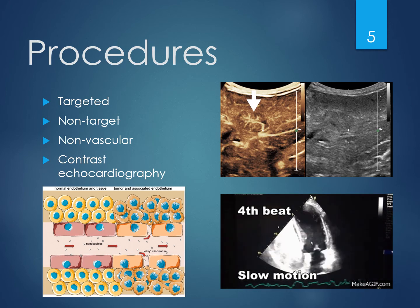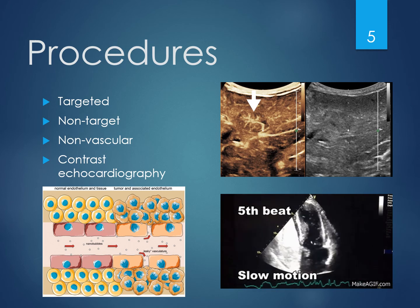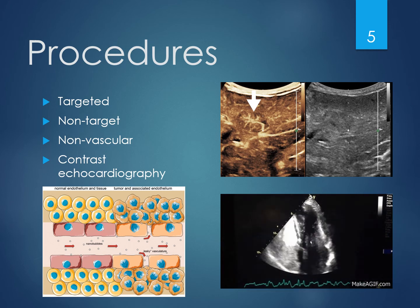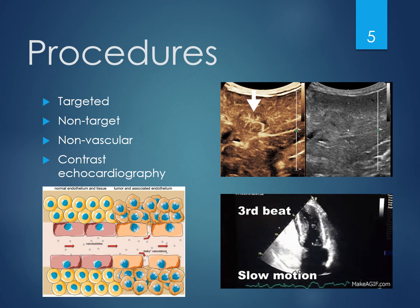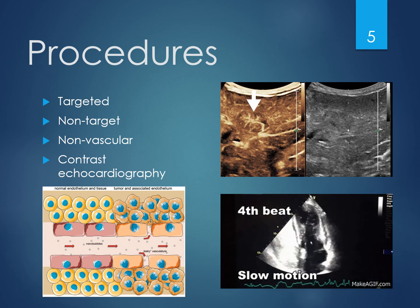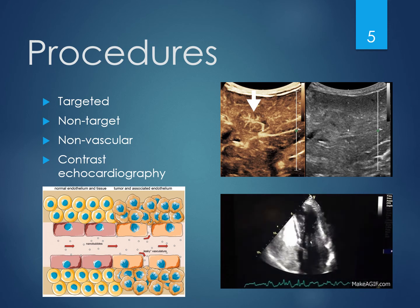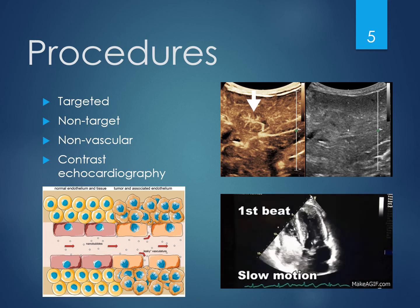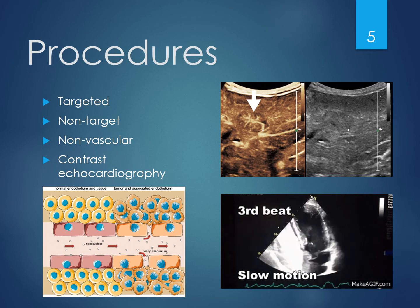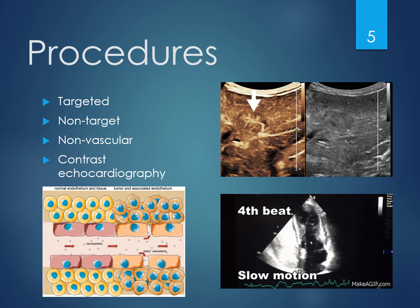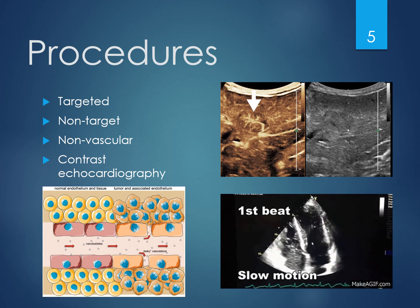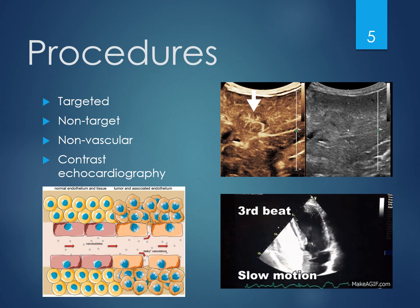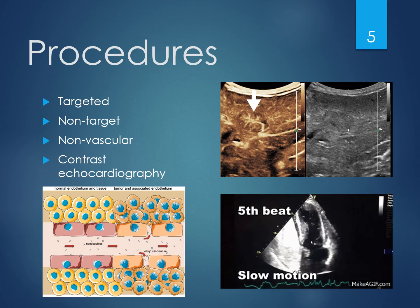Non-targeted procedures include dynamic evaluation of the vascularity of a target lesion, such as the picture shown on the top right, to measure organ perfusion, or where the contrast agent is taken up by specific cells based on shell composition, such as Kupffer cells in the liver. Non-vascular applications include inspection or evaluation of the urinary tract.